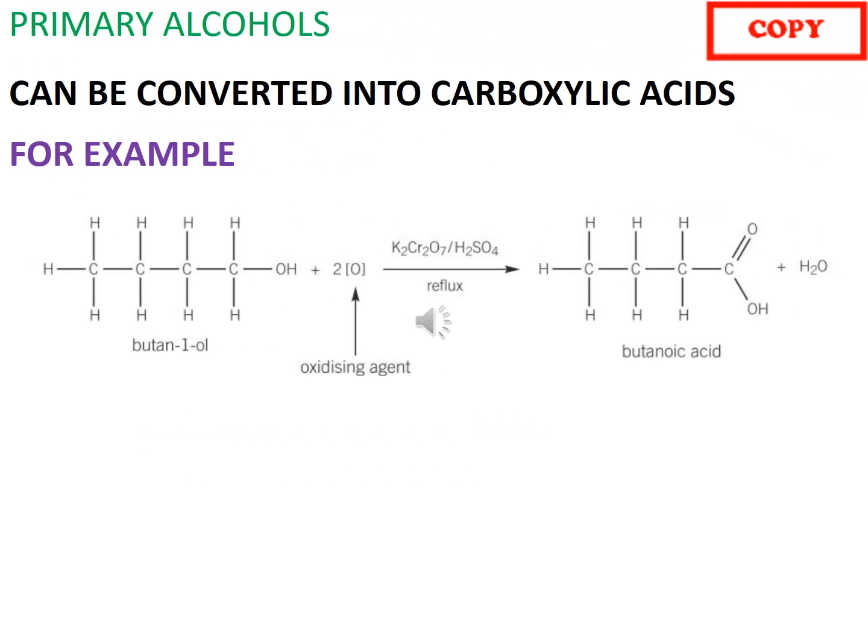An example of a full oxidation of a primary alcohol is seen here, where butan-1-ol, the primary alcohol, reacts with two moles of an oxidizing agent, potassium dichromate, to produce butanoic acid and water.